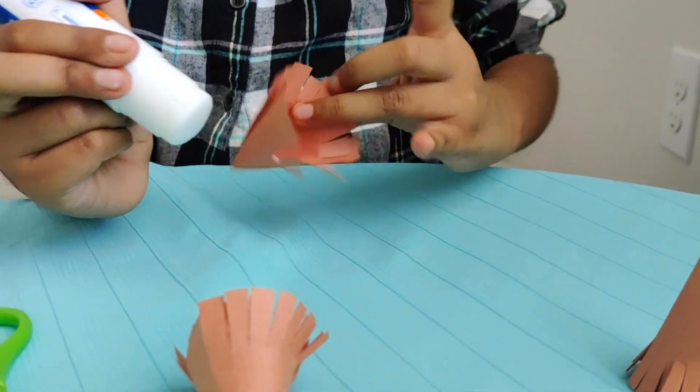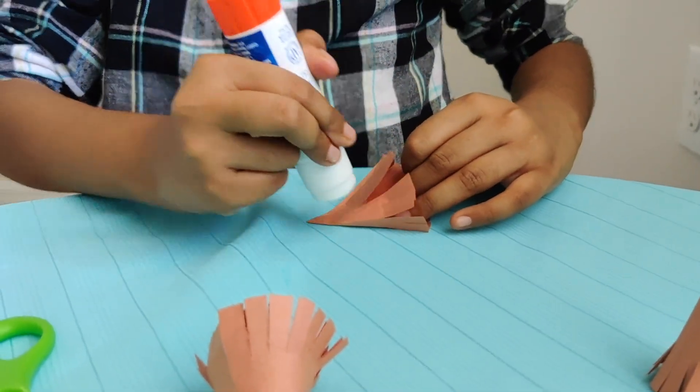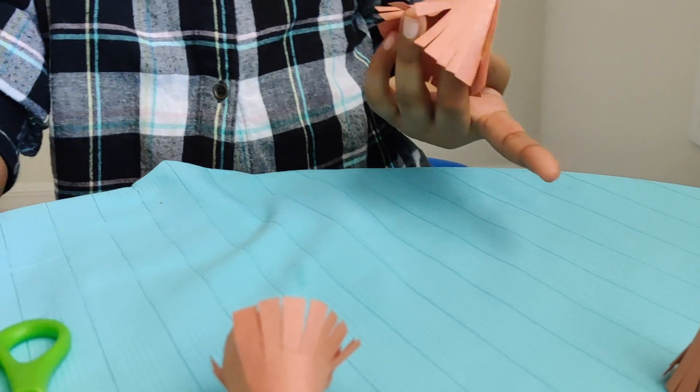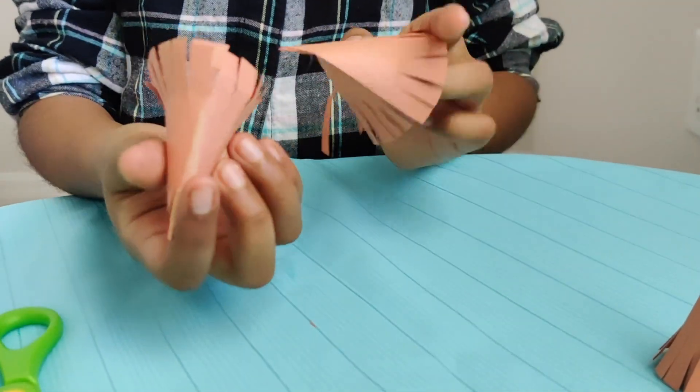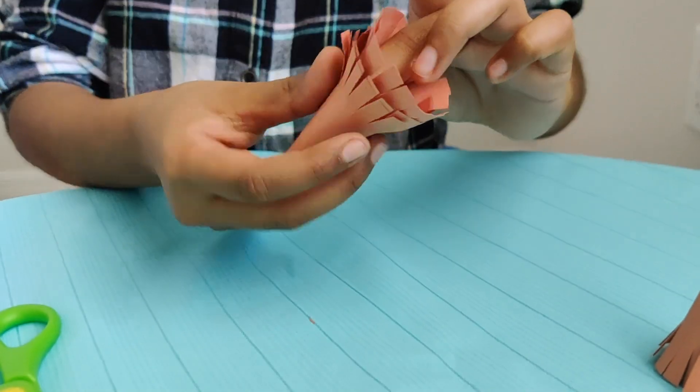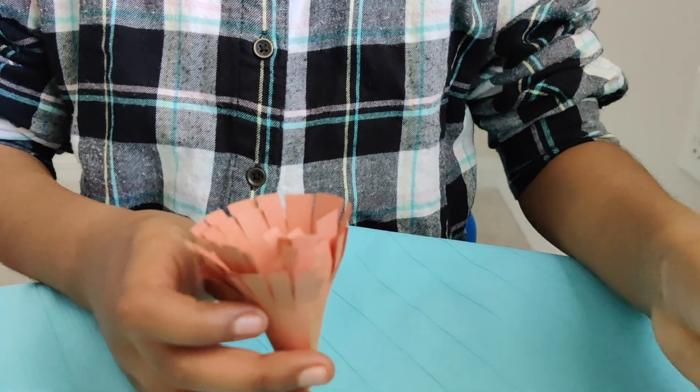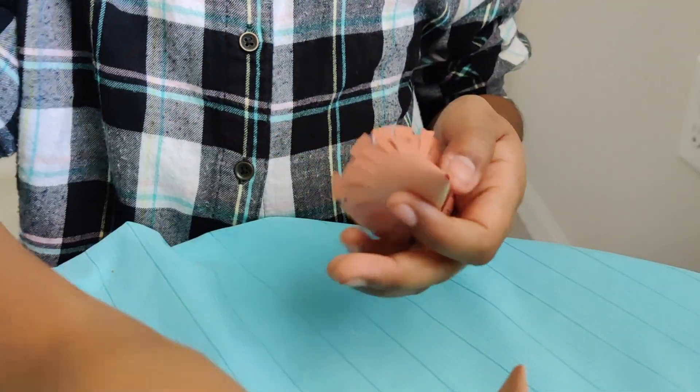First, apply some glue on the one you're going to put at the bottom. Then take the one you're going to put on top of it and stick it in. And then place some glue on here.